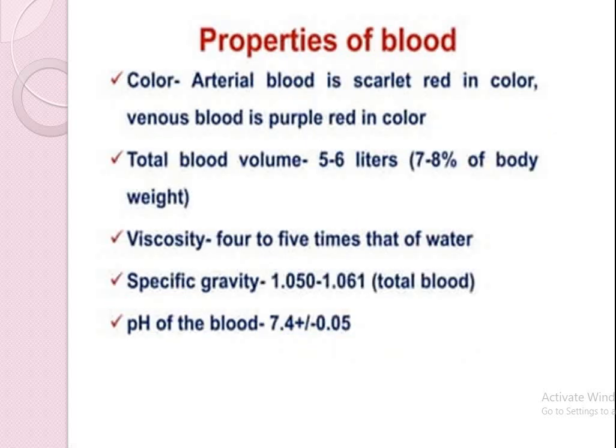Properties of blood. Arterial blood is red in color. Venous blood is purple-red in color. The total volume of blood is around 5 to 6 liters. Viscosity of blood is 4 to 5 times that of water. Specific gravity is 1.050 to 1.061. The pH of the blood is 7.4.